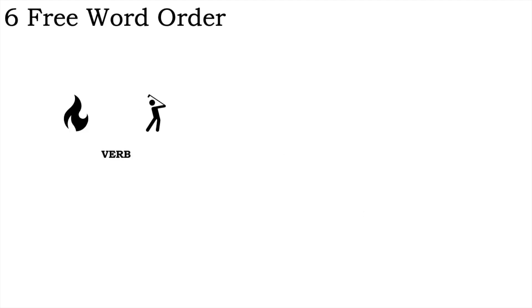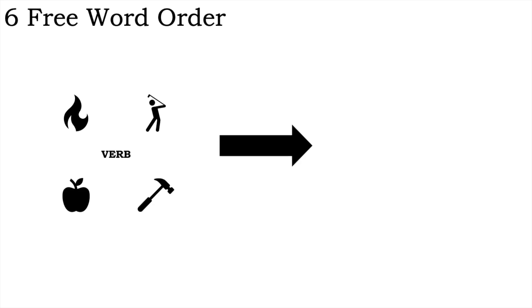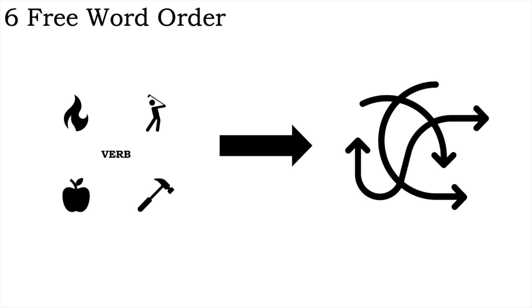One consequence of the fact that so much information about an event and its participants is encoded onto the verb in polysynthetic languages is that word order can be much more fluid than in languages like English, where word order is needed to distinguish subjects from objects. By no means do all polysynthetic languages have freer word order. However, they are more likely to have freer word order than a more analytic language of the English type.